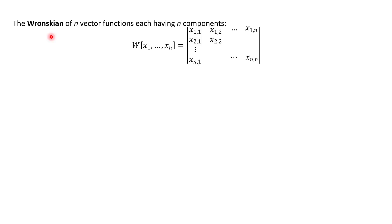Let's review the Wronskian, which we've talked about before but now has slightly different notation. The Wronskian of n vector functions each having n components is the determinant of a matrix. Previously the Wronskian was the determinant of a matrix containing the function y, y prime, y double prime, and so on. Since we're now substituting x1 for y, x2 for y prime, and so on, that's why the notation has changed from what we've seen in the past.